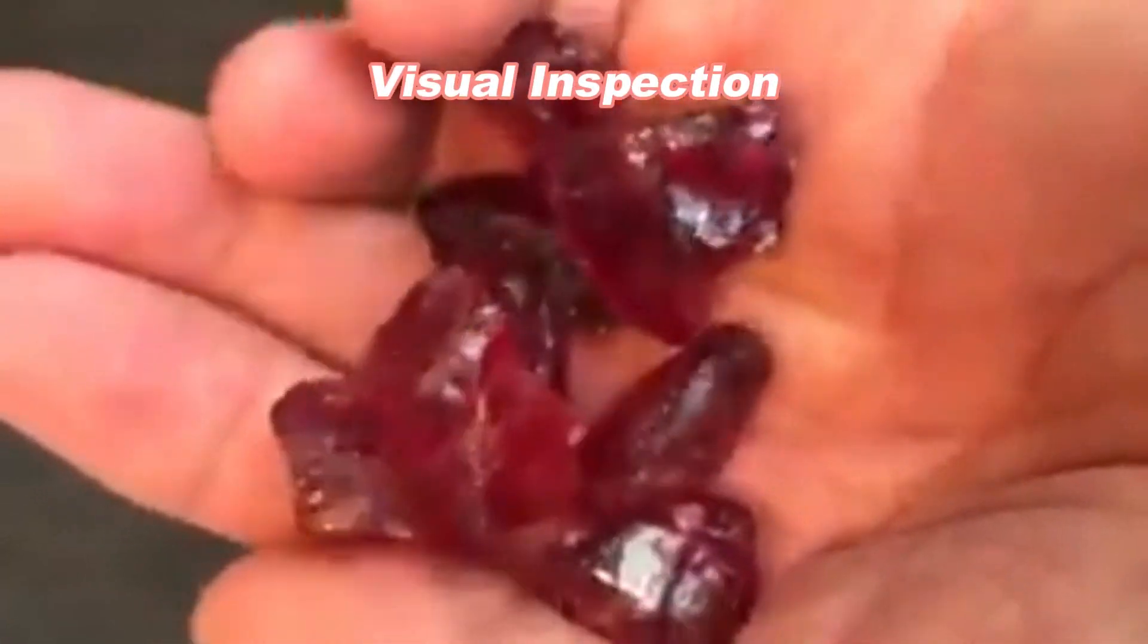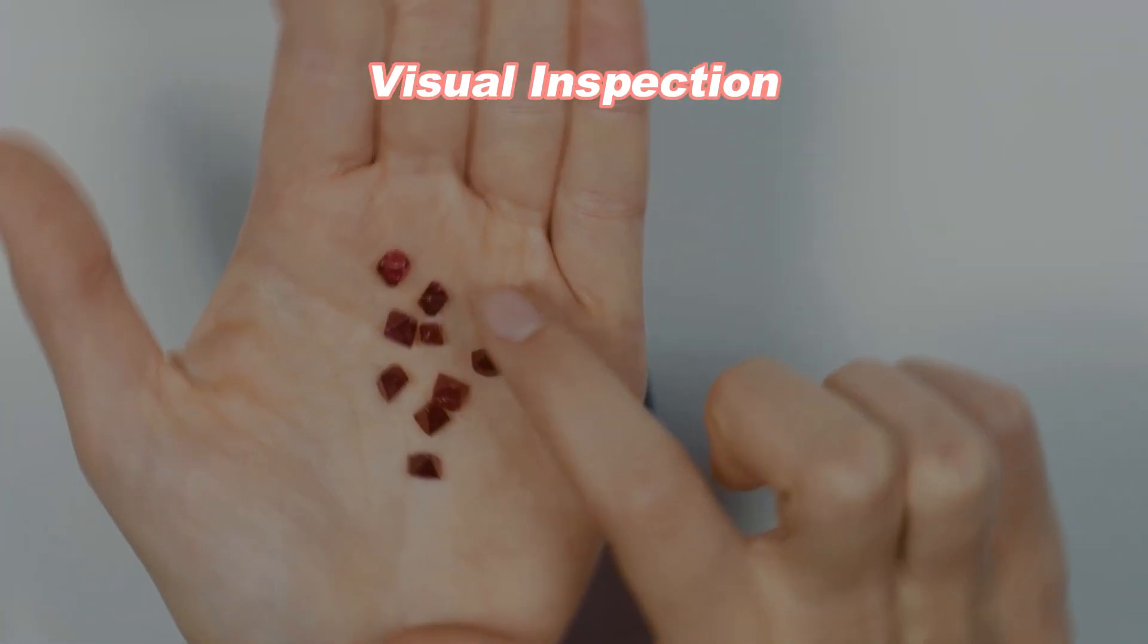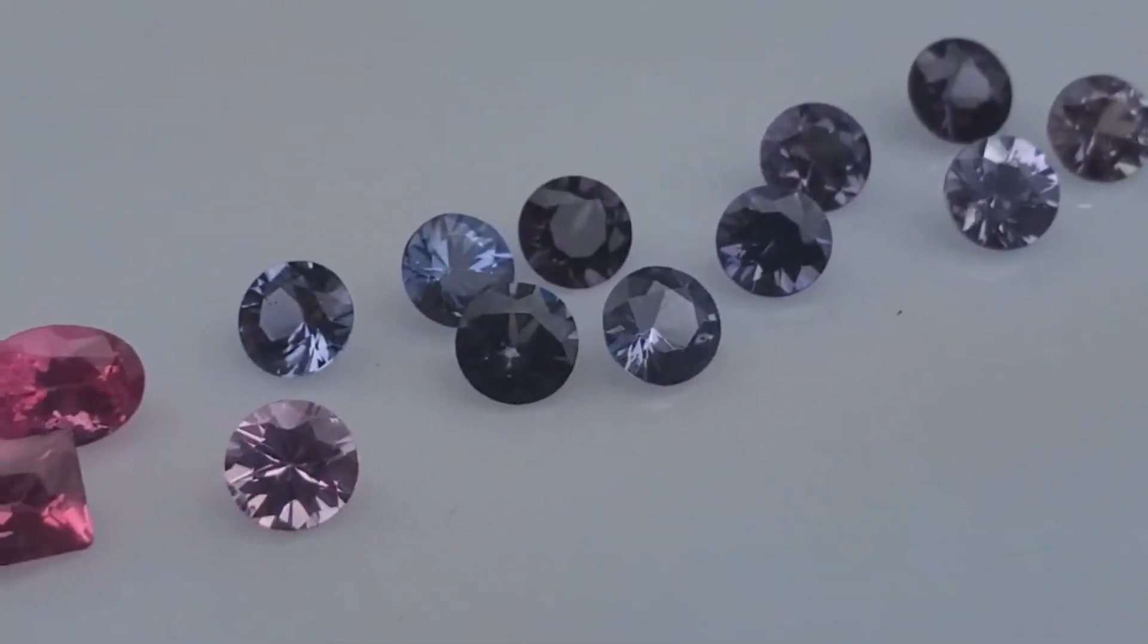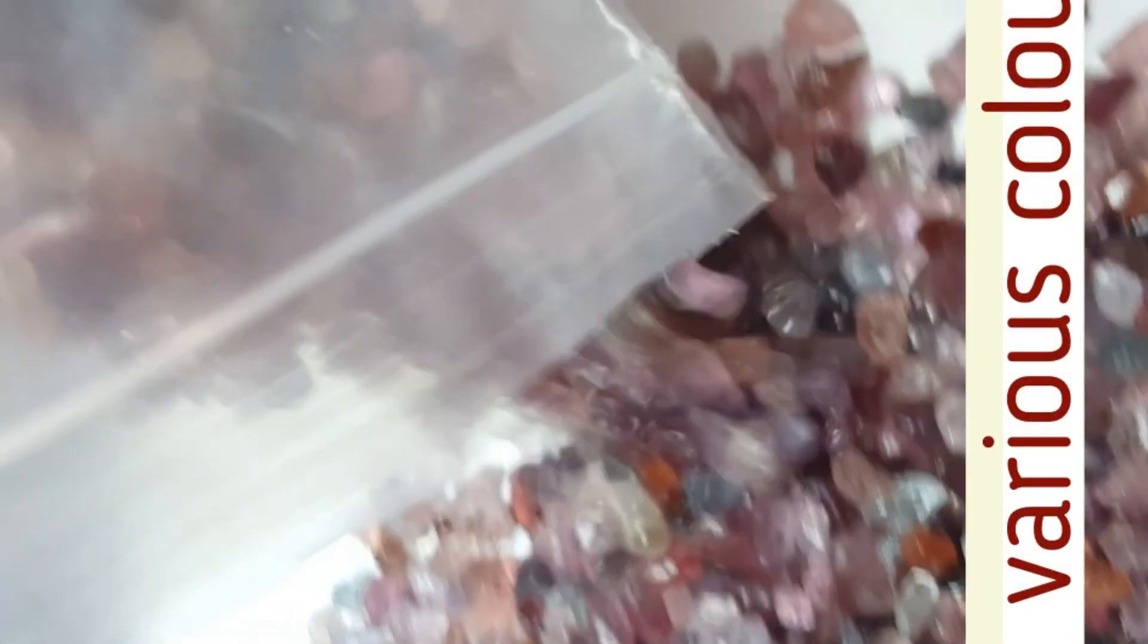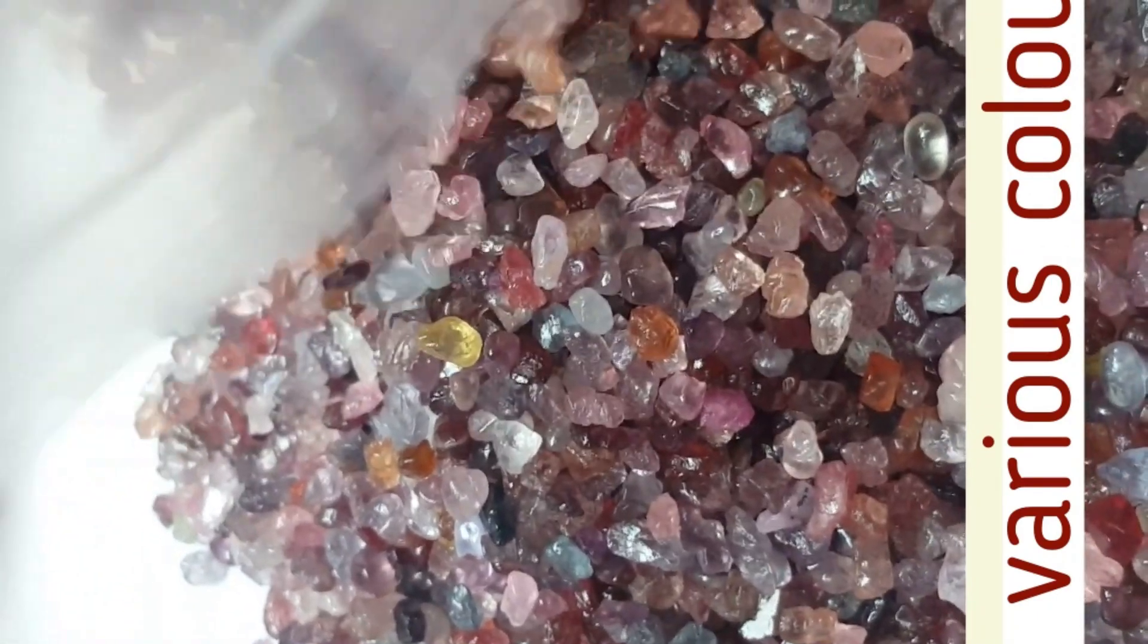Visual Inspection: Begin by visually inspecting the rough spinel. Pay attention to its color, transparency, and overall appearance. Spinel can come in various colors, including red, pink, blue, green, and more. Look for any visible inclusions or irregularities.